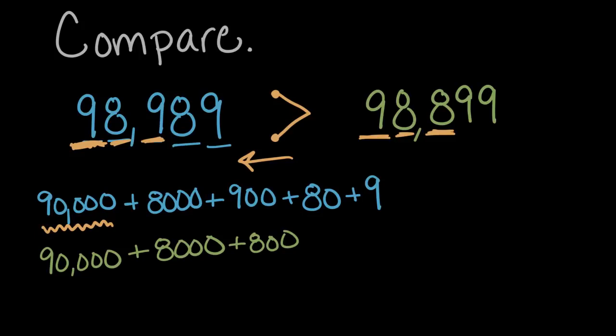And you might be thinking, but wait, we didn't look at the tens. Here we have eight tens, but on the right we have nine tens. Well, nine tens is definitely greater than eight tens, but it doesn't make up for having less hundreds. Hundreds are far bigger, 10 times bigger than tens, so they mattered more. They had a bigger impact on which of these numbers was larger.